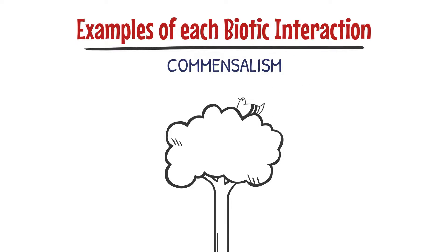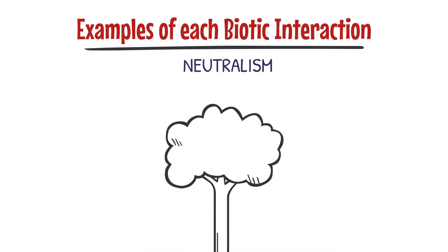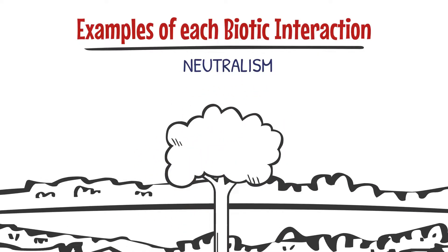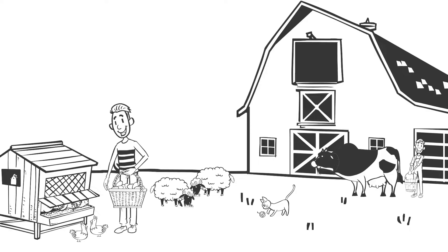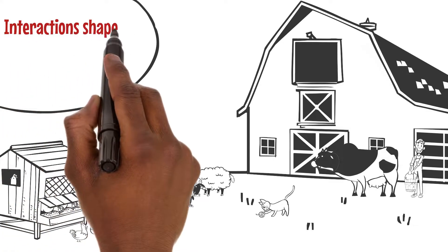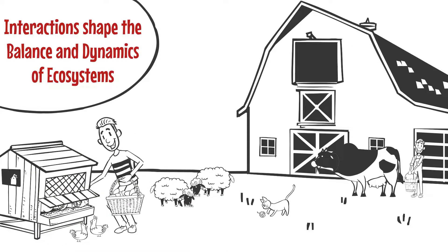Mutualism: think of a bee collecting nectar from a flower and in return transferring pollen, helping both the bee and the flower reproduce. Neutralism: picture two fish swimming on opposite sides of a pond, not interacting with each other at all. Isn't nature amazing? These interactions shape the balance and dynamics of ecosystems, allowing different species to coexist and survive.